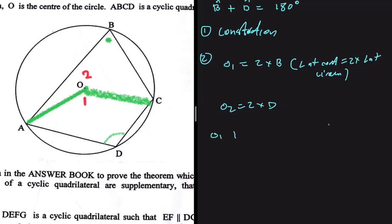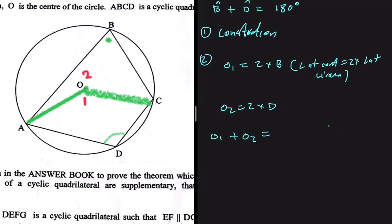We can say that O1 plus O2 equals... What is O1? 2B. What is O2? 2D. But then O1 plus O2 equals 360 degrees, the angle around the point. So we're going to have 360 being equal to 2B plus 2D. We can take out 2 as a common factor to get B plus D.